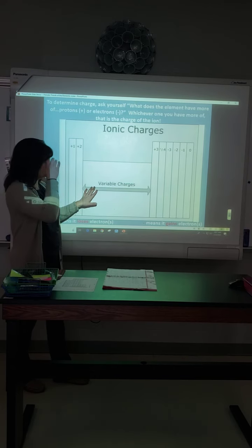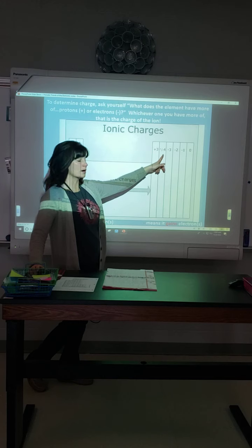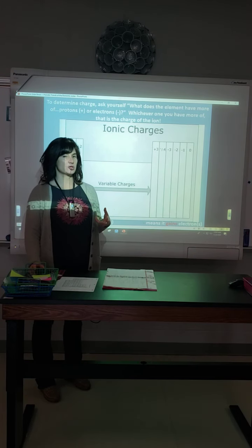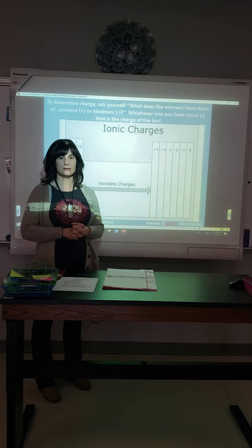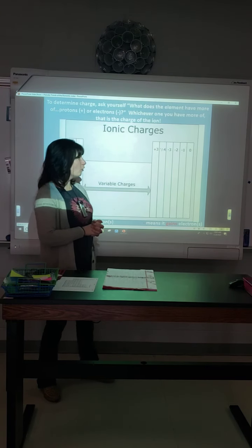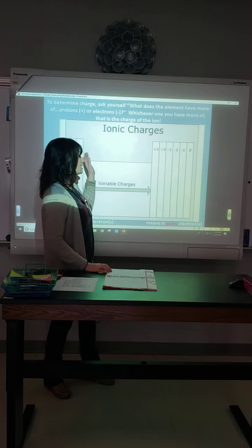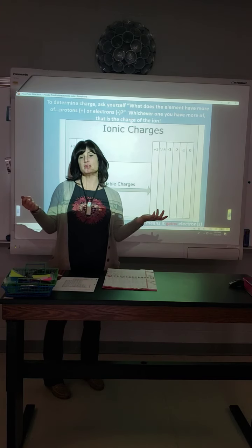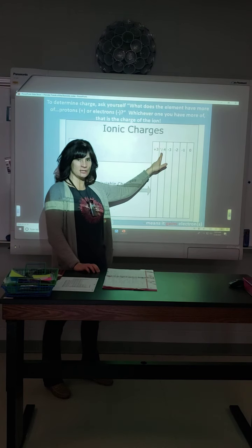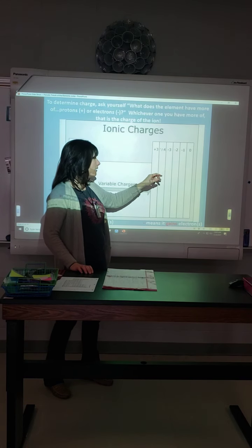The transition metals have variable charges, so we'll leave those for now. Valence group 4 has a plus or minus because it's right in the middle — it's equally easy to give away 4 or gain 4. The goal is to achieve a stable octet — eight electrons in the outer energy level, like an octagon. At valence group 4, you're exactly halfway, so some elements give away 4, some take 4. I won't ask you to predict charges for valence group 4 elements right now.